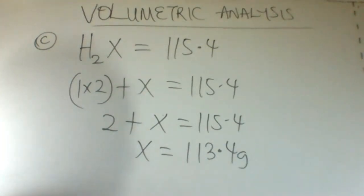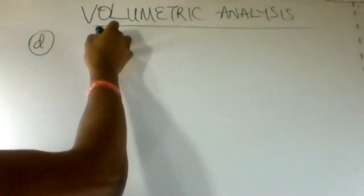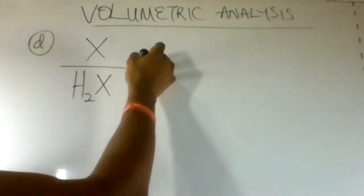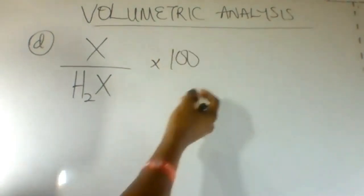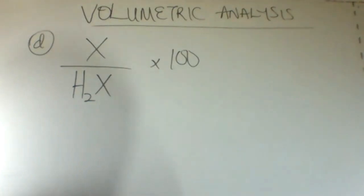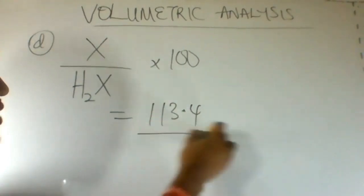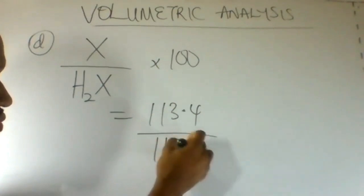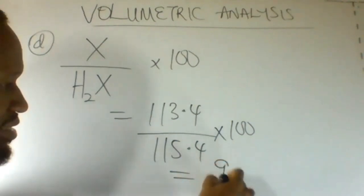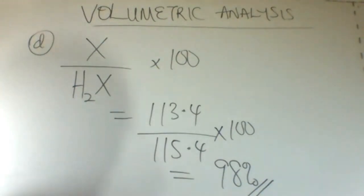To find the percentage by mass of x in H2x, we use: mass of x divided by the mass of H2x, multiplied by 100%. Mass of x is 113.4 and mass of H2x is 115.4. Our final answer is 98% — the percentage by mass of x is 98%.